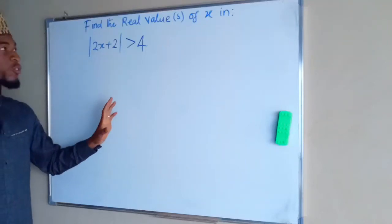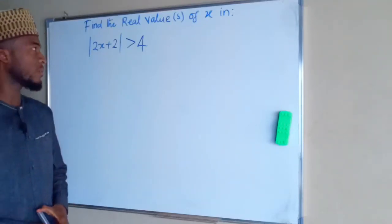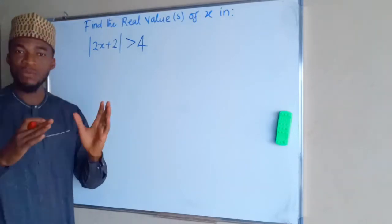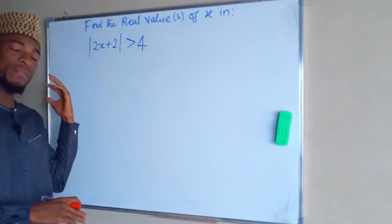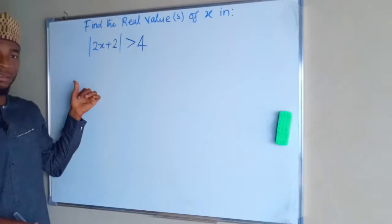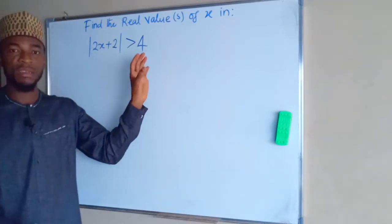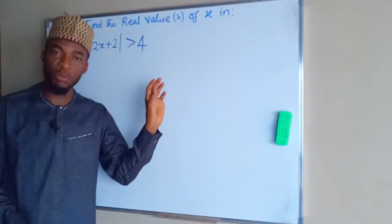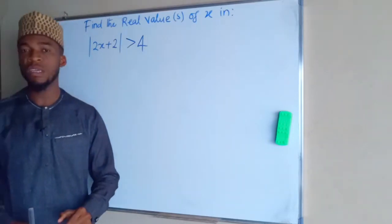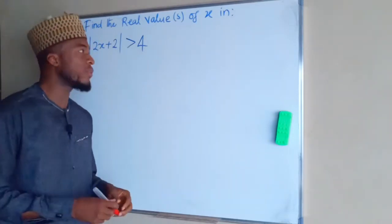In this expression we are asked to find the real values of x. This expression comprises of two parts: the left hand side and the right hand side. The left hand side is an absolute value while the right hand side is a rational number. The two are connected with an inequality, and this inequality is a greater than type.